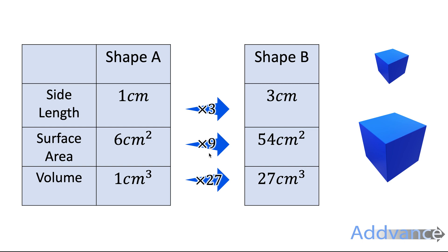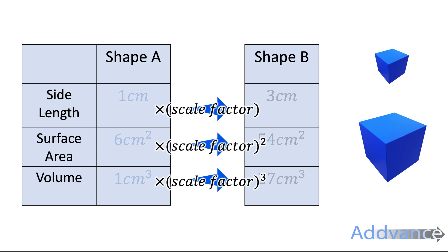That's 3, 9 and 27: 3 to the power 1, 3 to the power 2 and 3 to the power 3. And this is a pattern for all 3D shapes, where we have a scale factor for the length — the normal scale factor going from the smaller length to the bigger length. Then to go from the smaller area to the bigger area, you multiply by that scale factor squared. And to go from the smaller volume to the bigger volume, you multiply by that scale factor cubed.